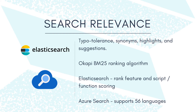The key difference being that Elasticsearch offers rank feature and script or function scoring, while Azure has additional language analyzers created by Microsoft, so it can support a total of 56 languages.